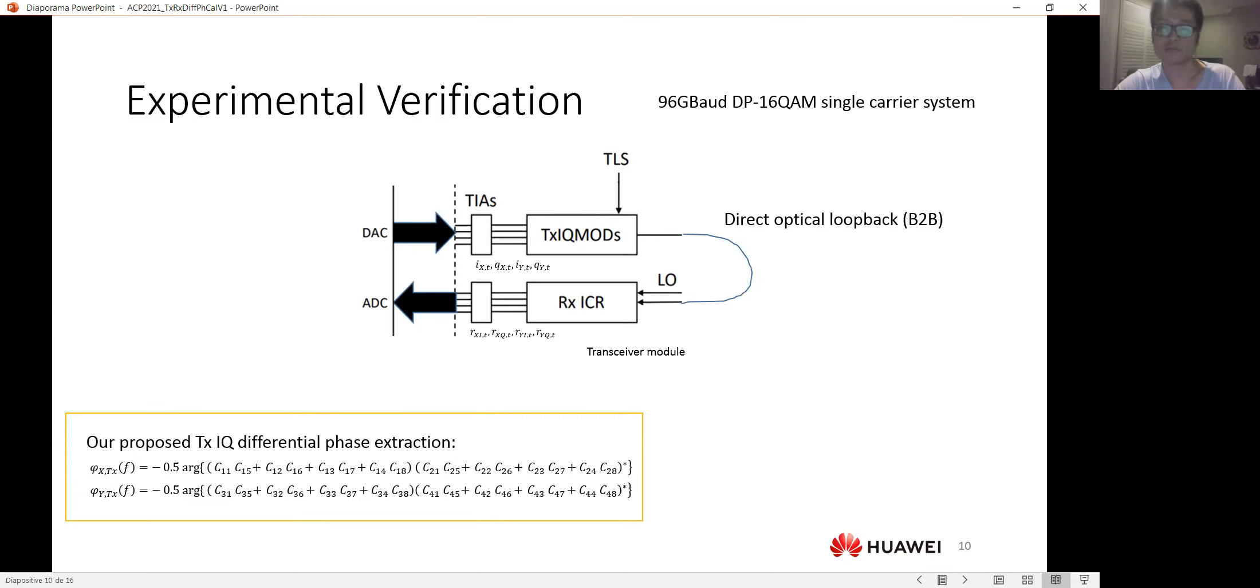For the experimental verification, we just do a direct loopback or a back-to-back setup. And first, we load some funny shape, which is a sinusoidal differential phase on the transmitter, and we can successfully retrieve the transmitter IQ differential phase of the same form from our DSP.